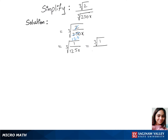Now let's separate the cubic root between the numerator and denominator. Cubic root of 1 over cubic root of 125x. Cubic root of 1 is 1, and cubic root of 125 is cubic root of 5 to the power 3, which equals 5. Now we have 1 over 5 times cubic root of x. We are also rationalizing here.